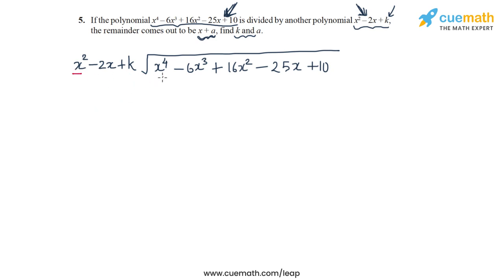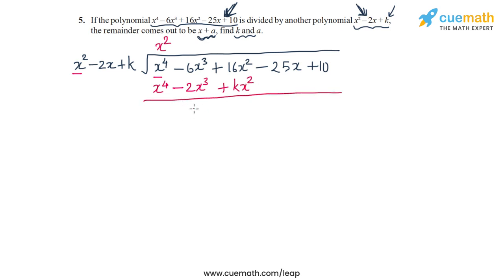In the first step we need to turn x squared into x to the 4, so we use the multiplier x squared. This generates the terms x to the 4 minus 2x cubed plus kx squared. Subtracting from the dividend gives us minus 4x cubed, plus (16 minus k) times x squared, and we bring down the remaining terms: minus 25x plus 10.